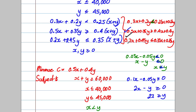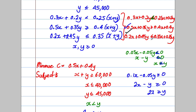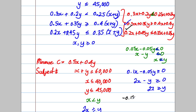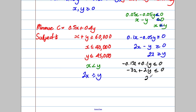For the juice constraint, subtracting 0.35(x+y) from both sides gives -0.15x - 0.10y ≤ 0. Dividing by 0.05 gives -3x + 2y ≤ 0, which rearranges to 2y ≤ 3x. So the simplified juice constraint is 2y ≤ 3x. And we still have x, y ≥ 0.